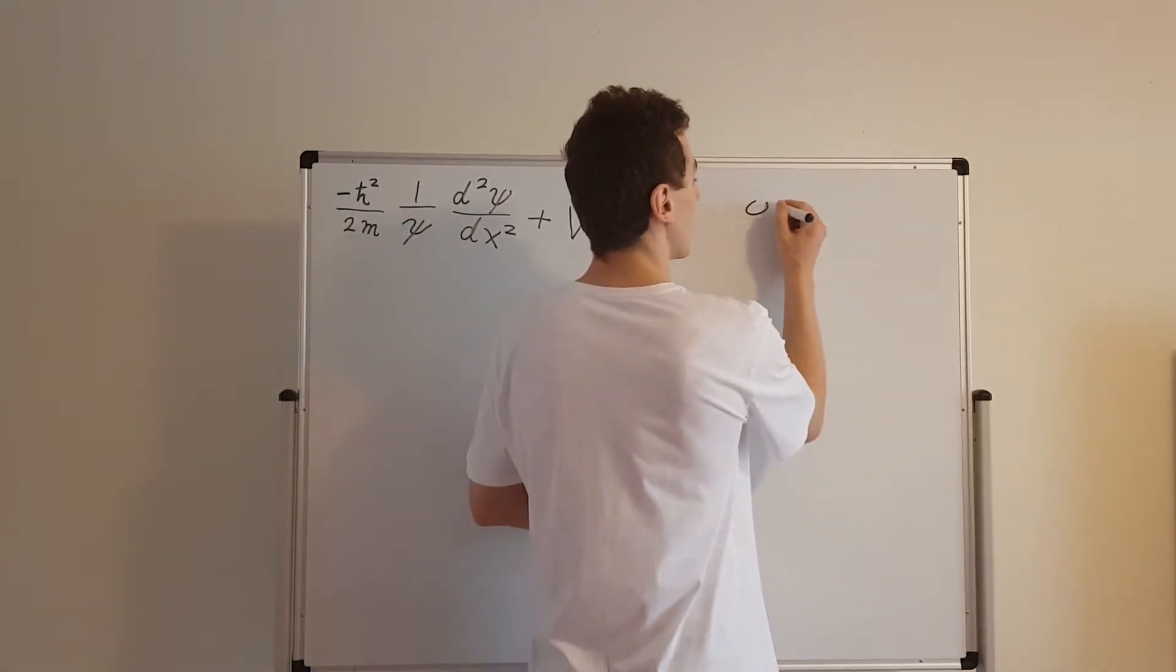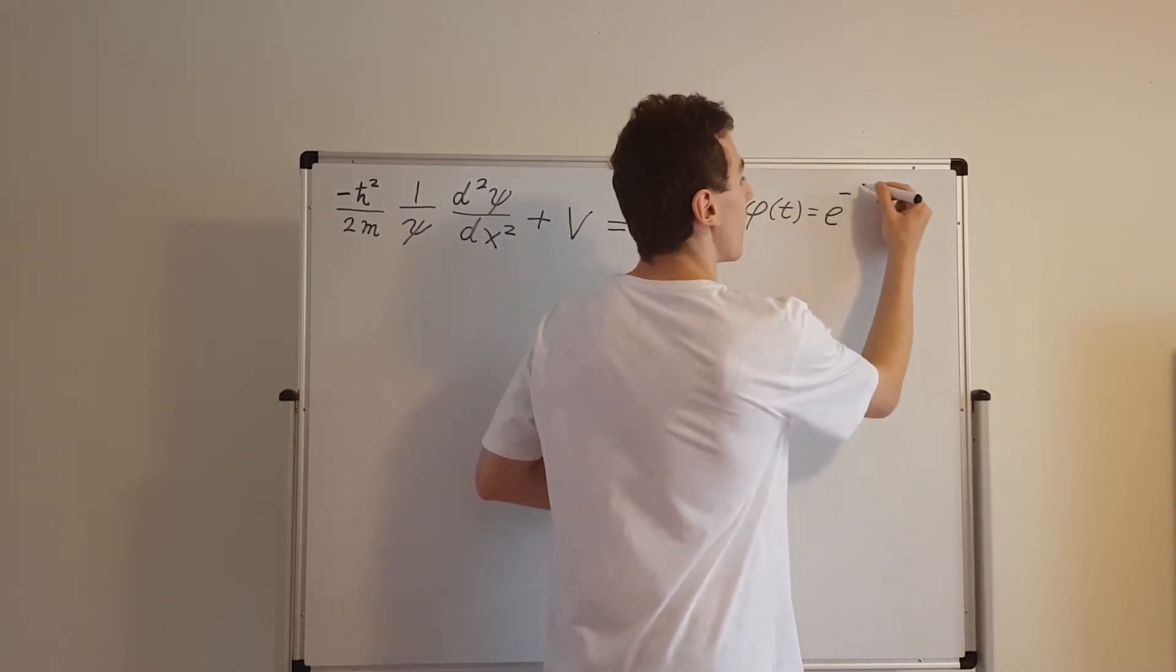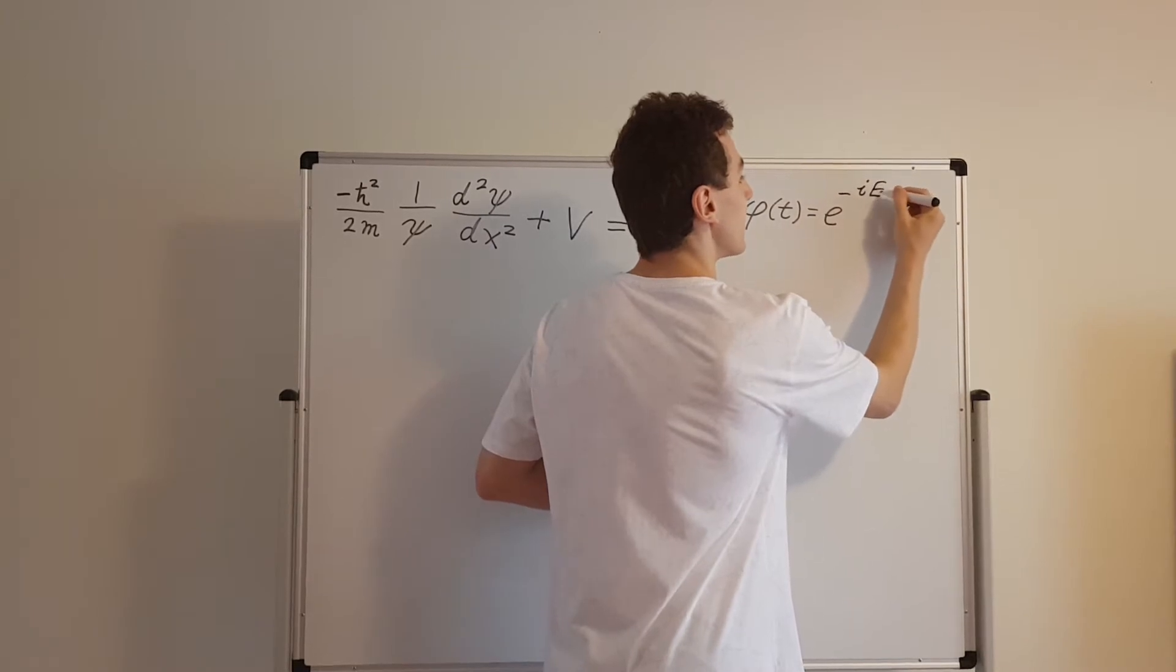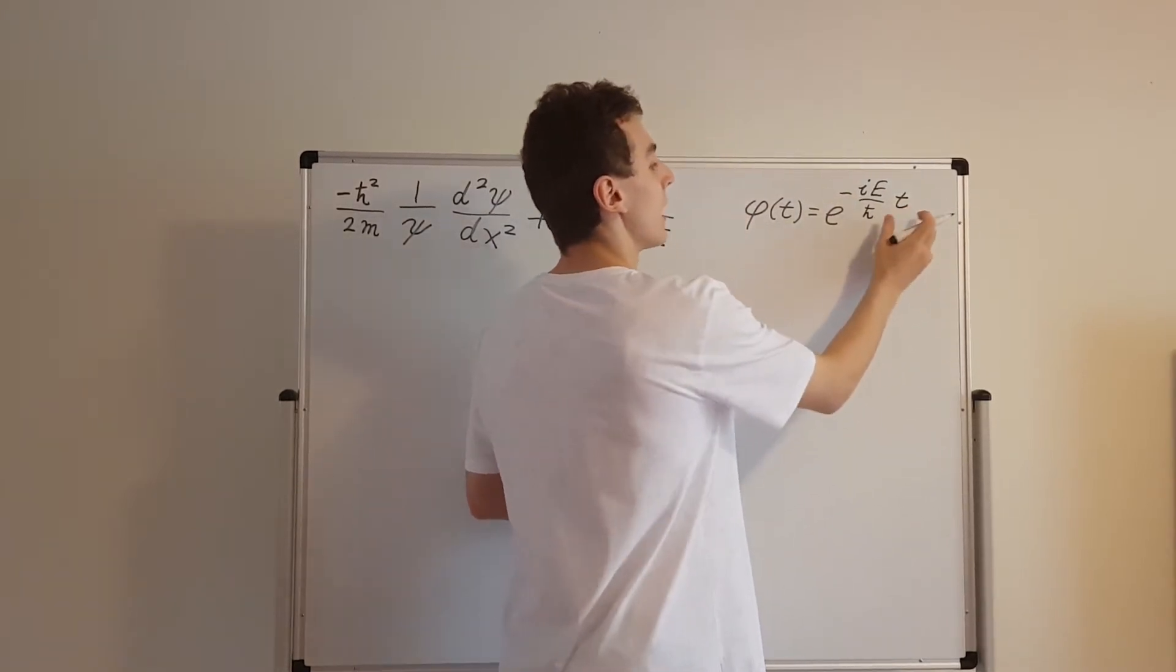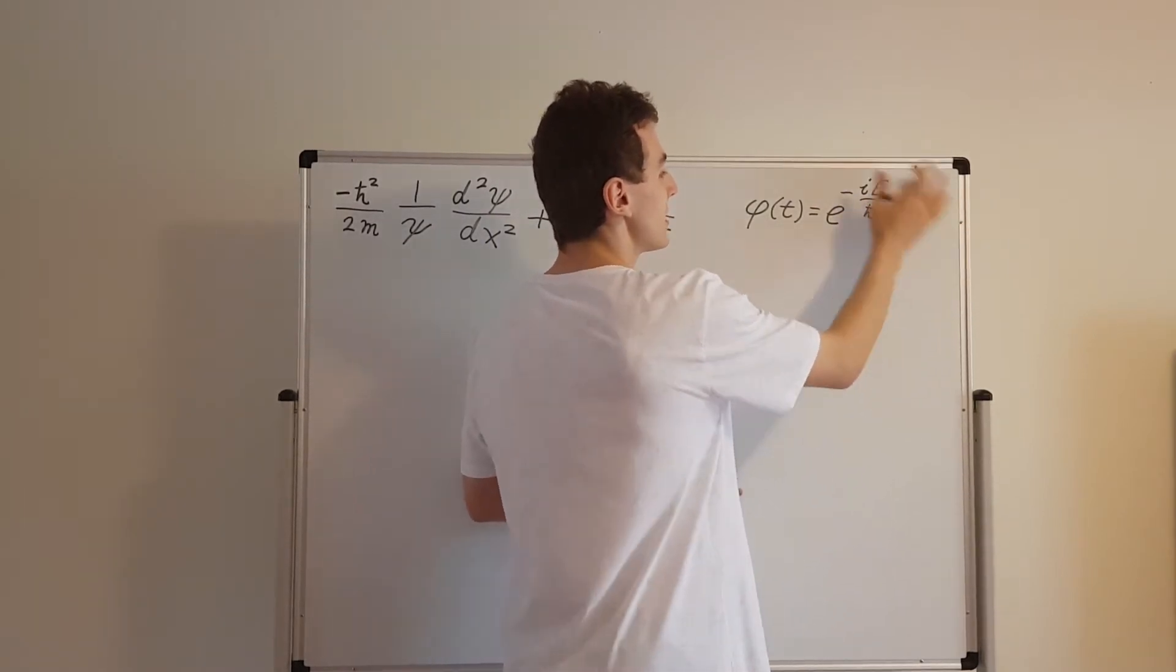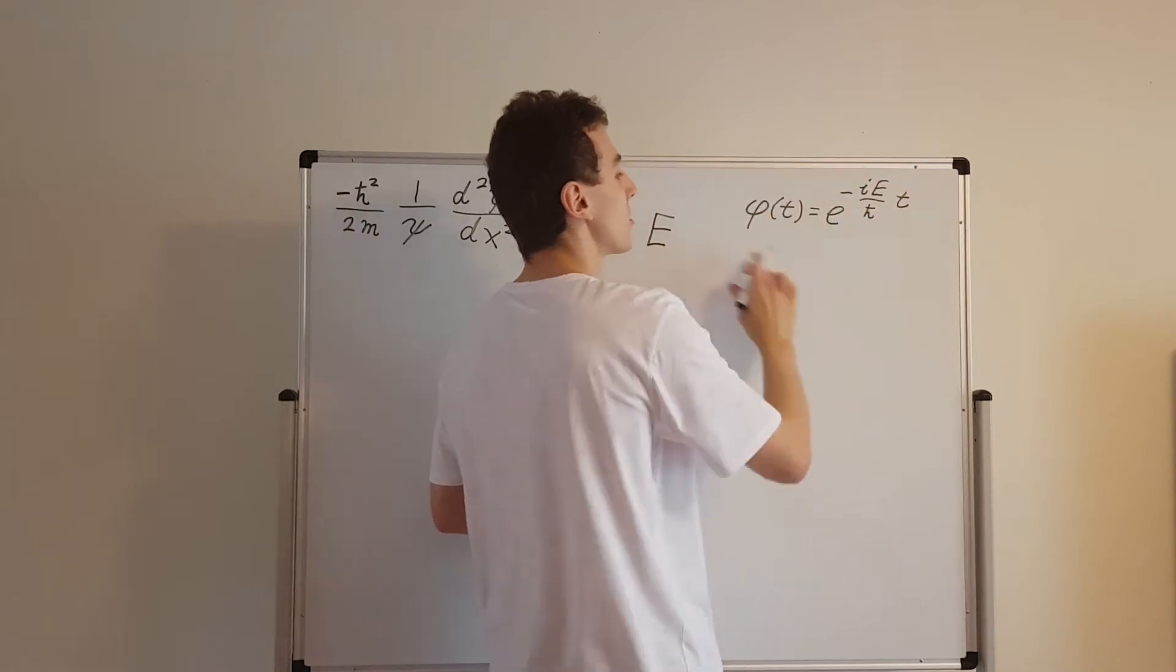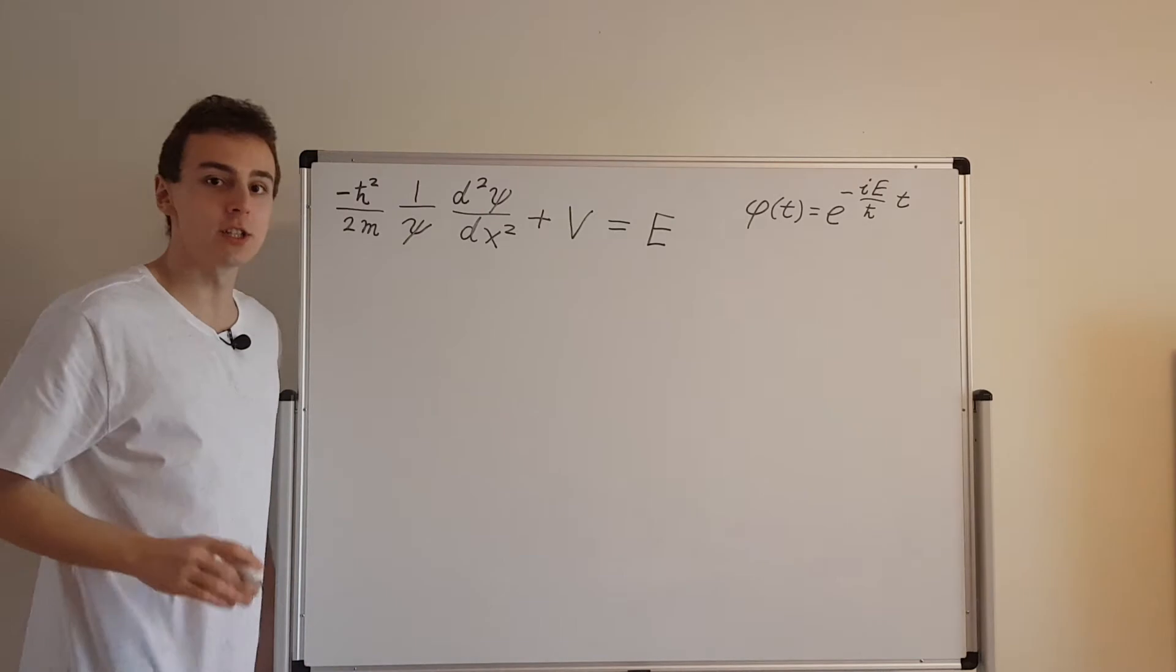Well, phi of t we found, so phi is a function of t. This is the time dependence. This is e to the minus i E over h bar times time. So time is up here and there's a constant and it's actually an imaginary constant. So this is all being exponentiated and this is our function phi. Now our job is to find this little psi.